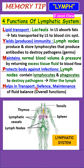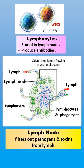Finally, H is for help — the lymphatic system helps in transport, defense, and maintenance of fluid balance. Here is a picture of the lymphatic system with all its components: the thymus, tonsils, spleen, lymphatic vessels, and lymph nodes. Lymphocytes are white blood cells produced and stored in the lymph nodes that produce antibodies to destroy pathogens. The lymph nodes also contain phagocytes that help filter out pathogens and toxins from the lymph.